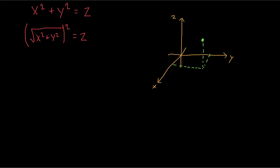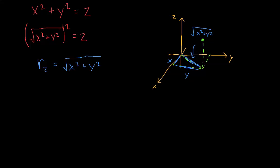Say we have some random point in three-dimensional space. By the Pythagorean theorem, the square root of x squared plus y squared is the distance of the point from the z-axis. We will call this quantity — the square root of x squared plus y squared — rz, which just means the shortest distance from the z-axis of any point. Using this new notation, we can write our equation as rz squared equals z.